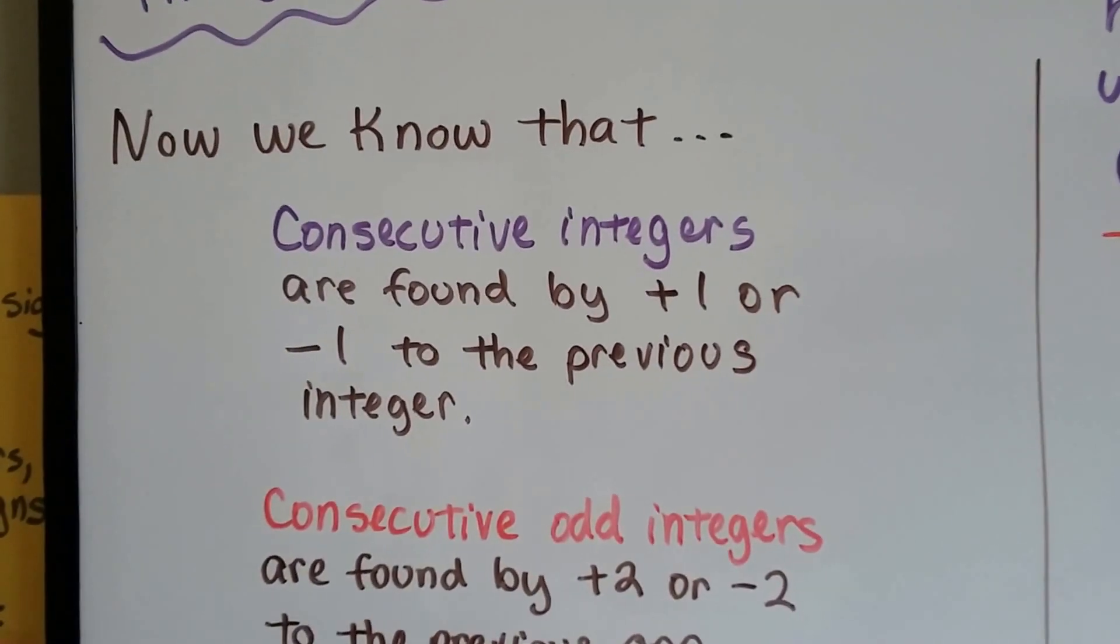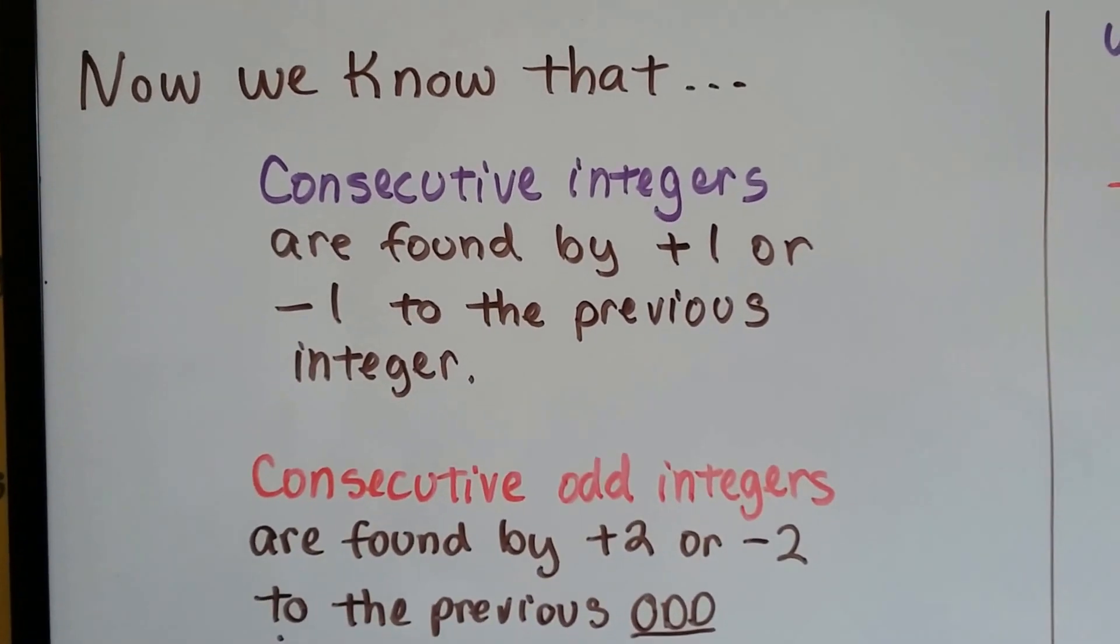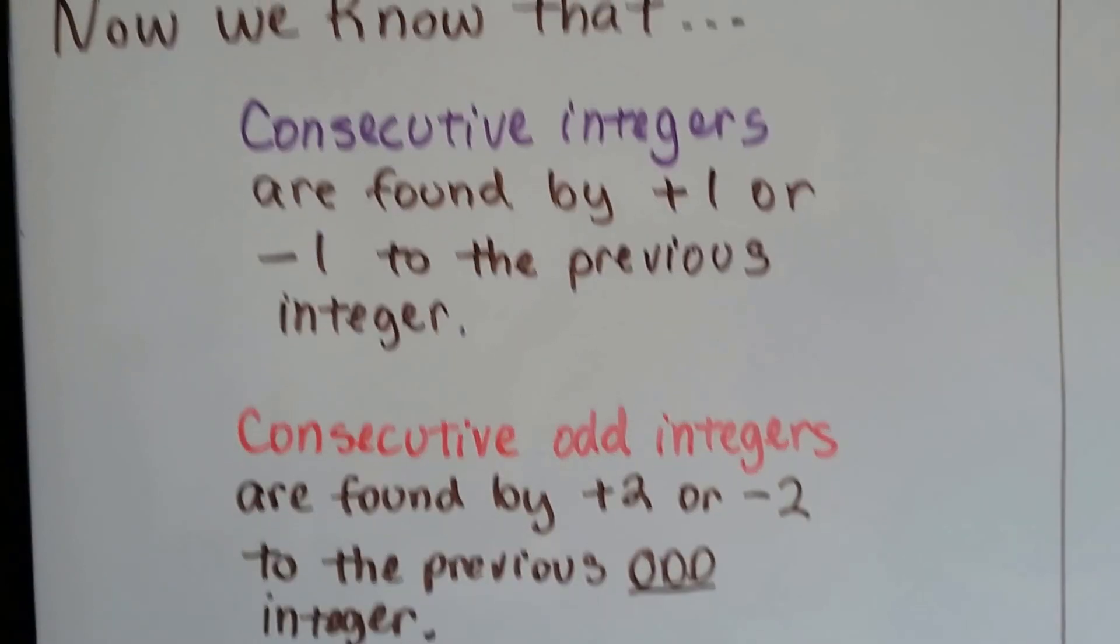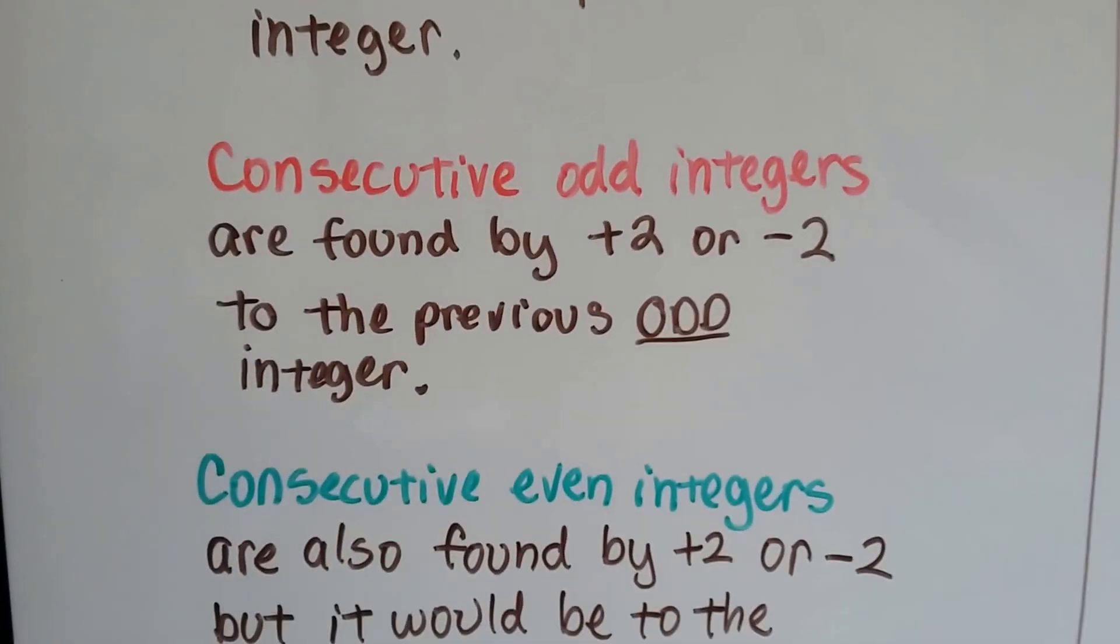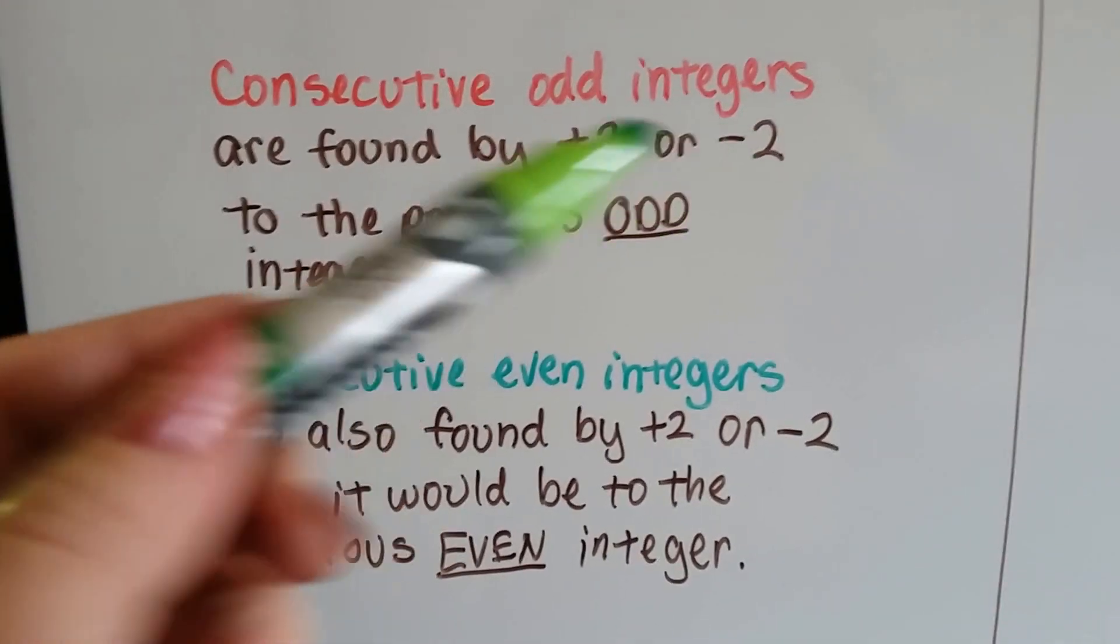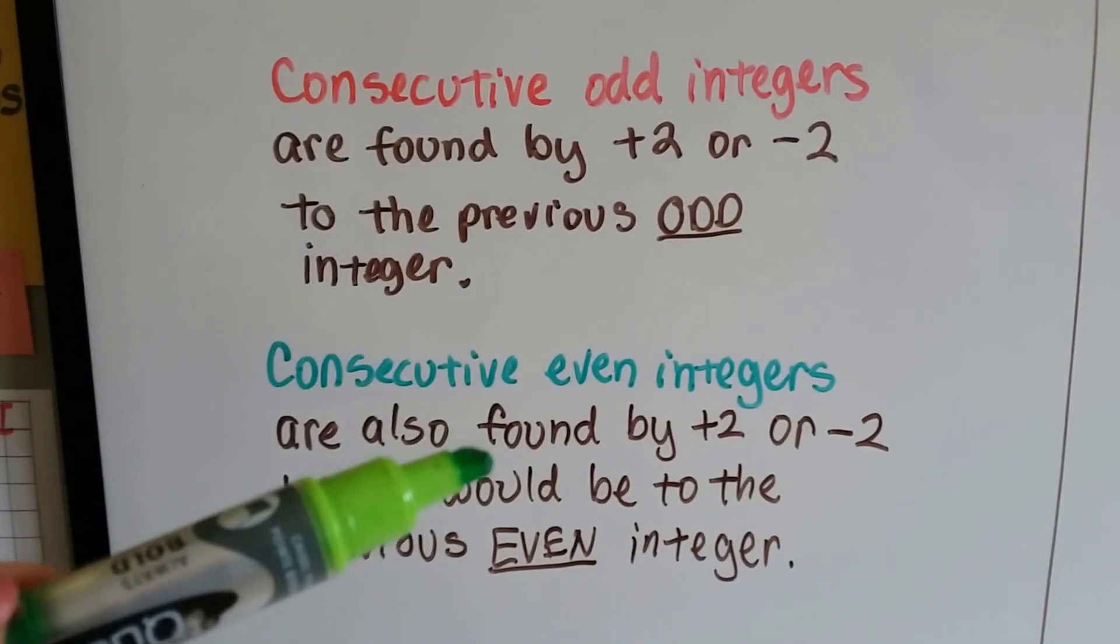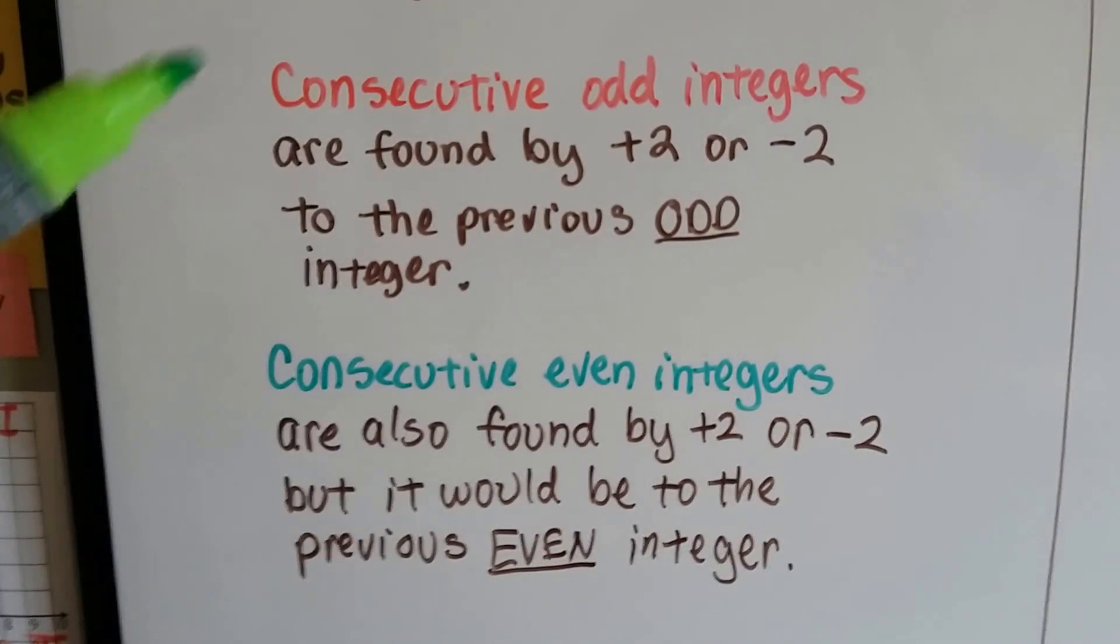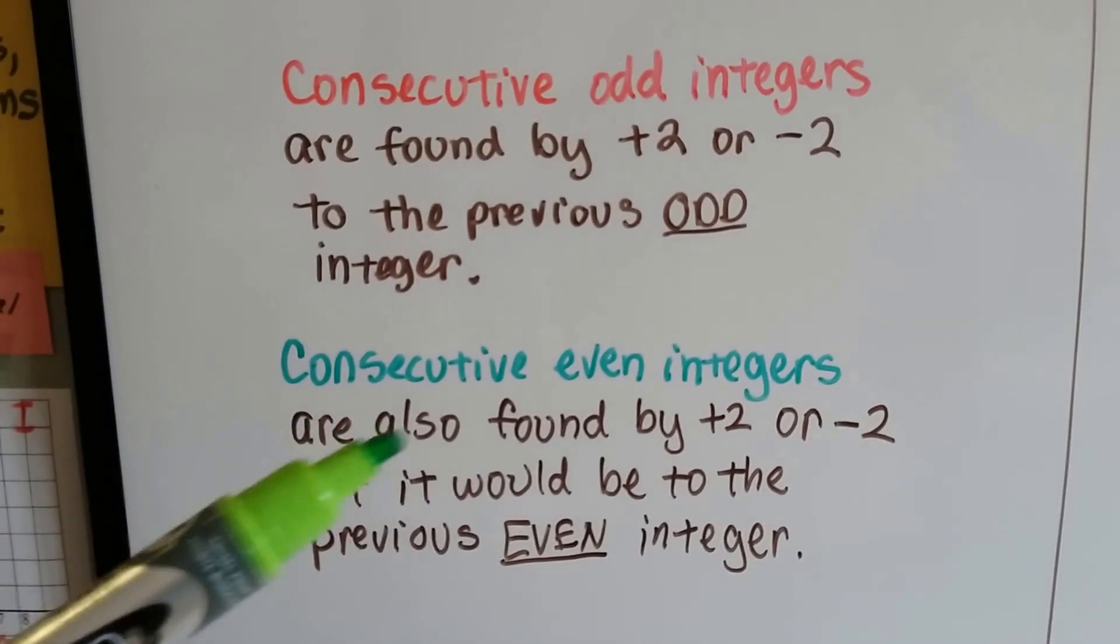From the last couple of videos, we now know that consecutive integers are found by plus one or minus one to the previous integer. And if it's a consecutive odd integer or an even integer, we plus two or minus two to find the larger one or the smaller integer, because odd numbers skip count by two and even numbers skip count by two.